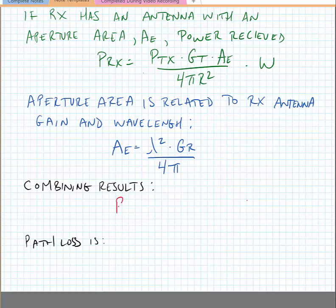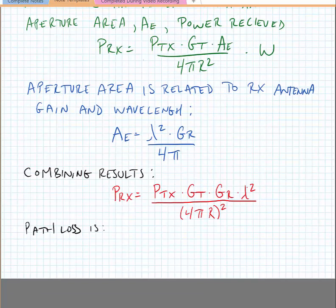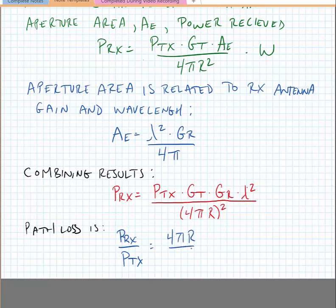Combining these results, the power at the receiving antenna is given by: transmitted power times the gain of the transmitting antenna times the gain of the receiving antenna, times the wavelength squared, divided by the surface area of the equivalent spherical volume. From this, we can write the path loss as the ratio of power received to power transmitted as (4π r / λ)² times one over the transmitting antenna gain times the receiving antenna gain.